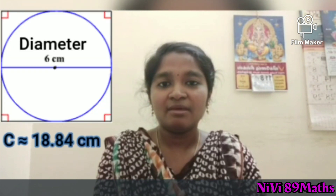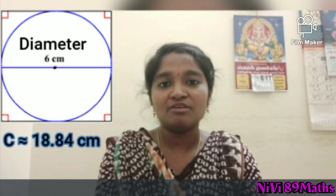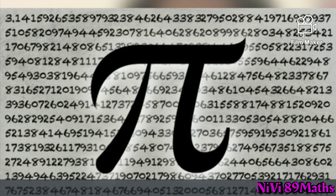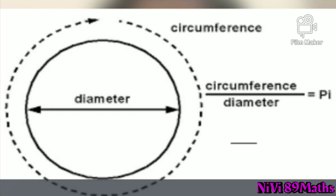For example, 18.84 divided by 6 gives approximately 3.14. Similarly, 21.98 divided by 7 gives approximately 3.14, and 25.12 divided by 8 also gives 3.14. This is the exact value. The circumference of the circle divided by the diameter equals pi — that is why we have the pi formula.